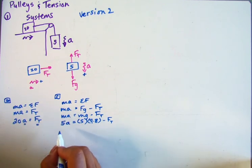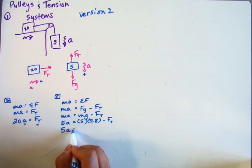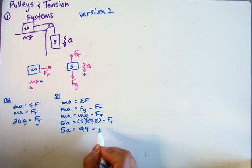5 times 9.8 is 49. So 5A equals 49 minus Ft.